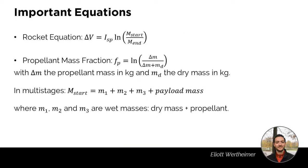To calculate how many stages of what size we need to give a certain change in velocity to a rocket, two equations are very important. First, the rocket equation, which states that the change in velocity delta-v is equal to the specific impulse of the rocket motor multiplied by the Napierian logarithm of the mass of the rocket at the start divided by the mass of the rocket at the end of the burn, once all the fuel has been burned.